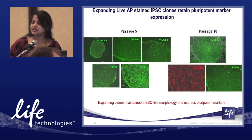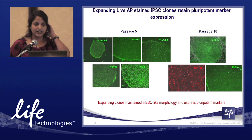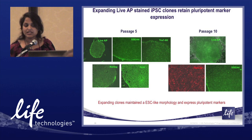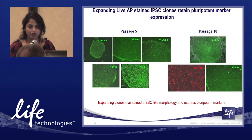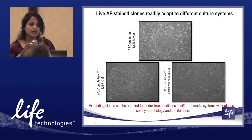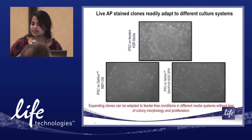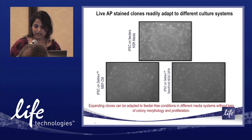Of the 12 clones picked, we continued with three. Representative images of one clone at passage 5 and passage 10 show that they can be repeatedly stained with live AP dye and continue to express pluripotent markers such as SSEA4, TRA-1-60, NANOG, and OCT4, maintaining ESC-like morphology. Around passage 10, clones can be readily adapted to different culture systems. Although originally derived in feeder-dependent systems with KSR media, we adapted them to feeder-free MEF-conditioned media or StemPro SFM without any loss of cellular structure or integrity.